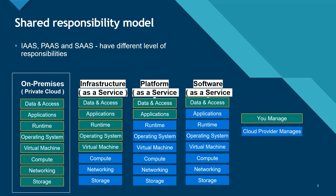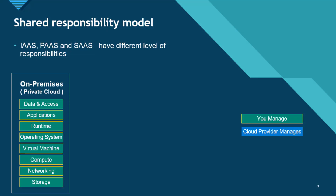Now let's take a closer look at this diagram to see who is responsible for what, depending on the cloud model that you choose. Each model has a different level of responsibility. The green and white labeled ones show what you manage, and the blue and white labeled ones represent what the cloud provider manages.